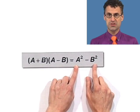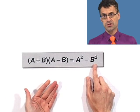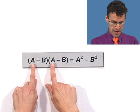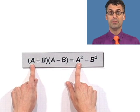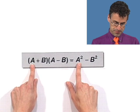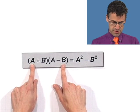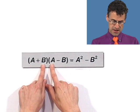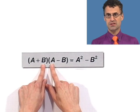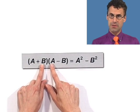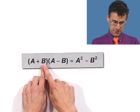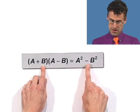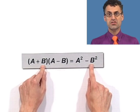You can check this for yourself by foiling. Let me show you really fast. a times a is a squared. Then the outside terms: a times negative b is negative ab. Then the inside terms: b times a is ab. So you have negative ab plus ab. They cancel each other. You're left with b times negative b, which is negative b squared. So a squared minus b squared.